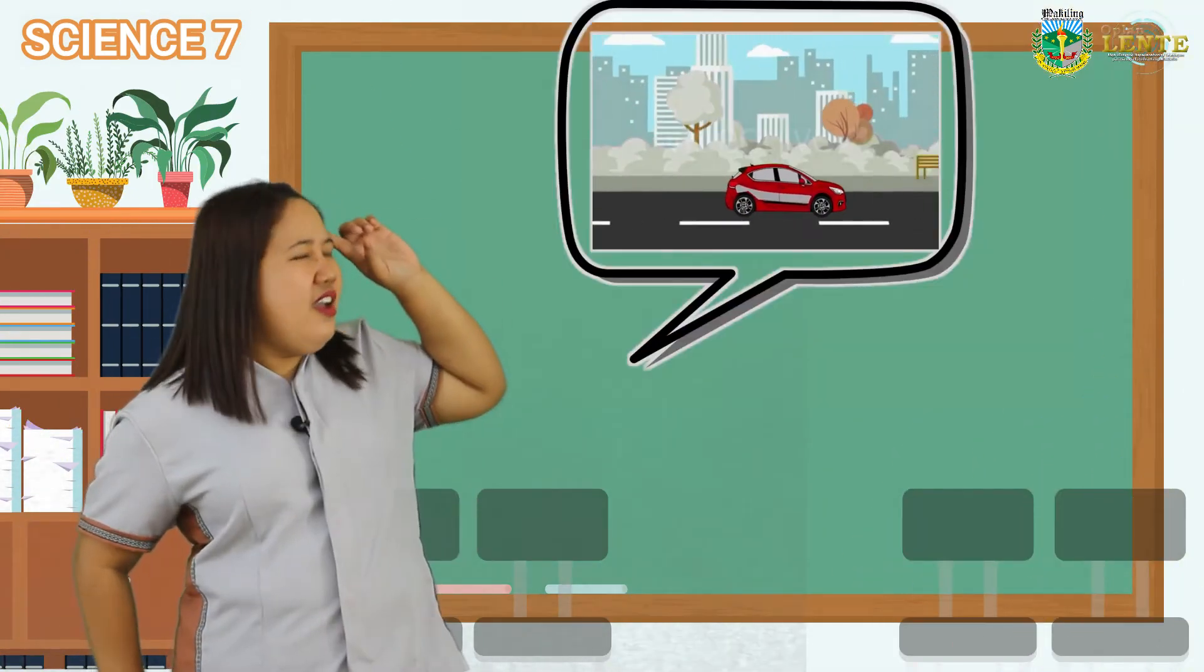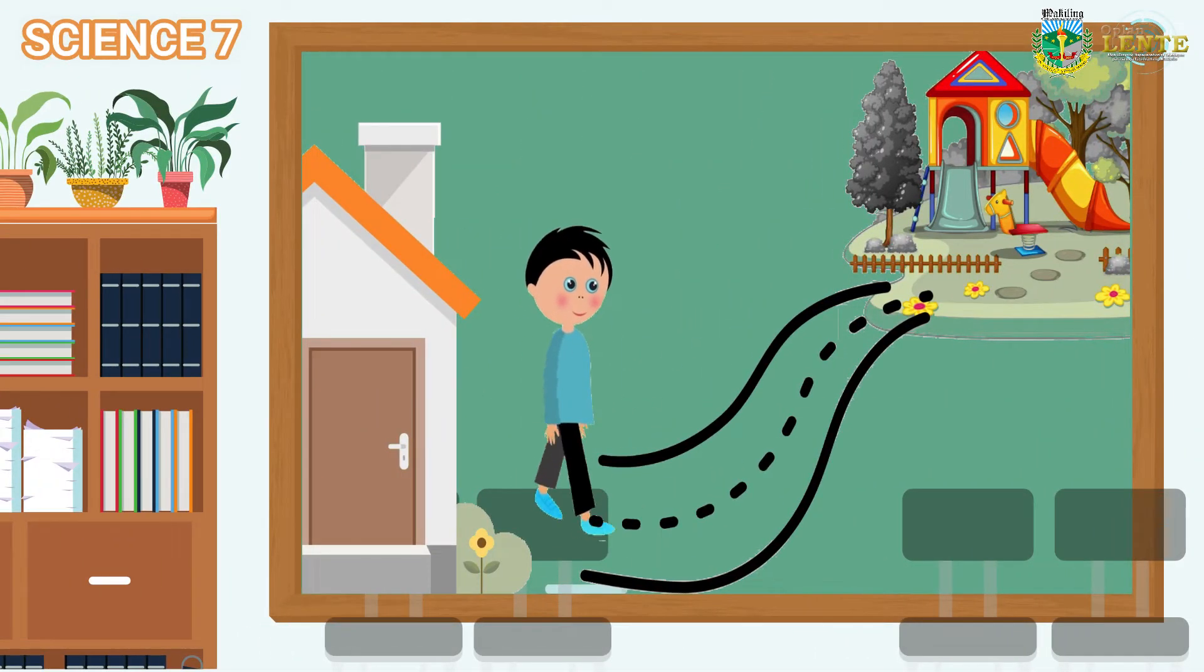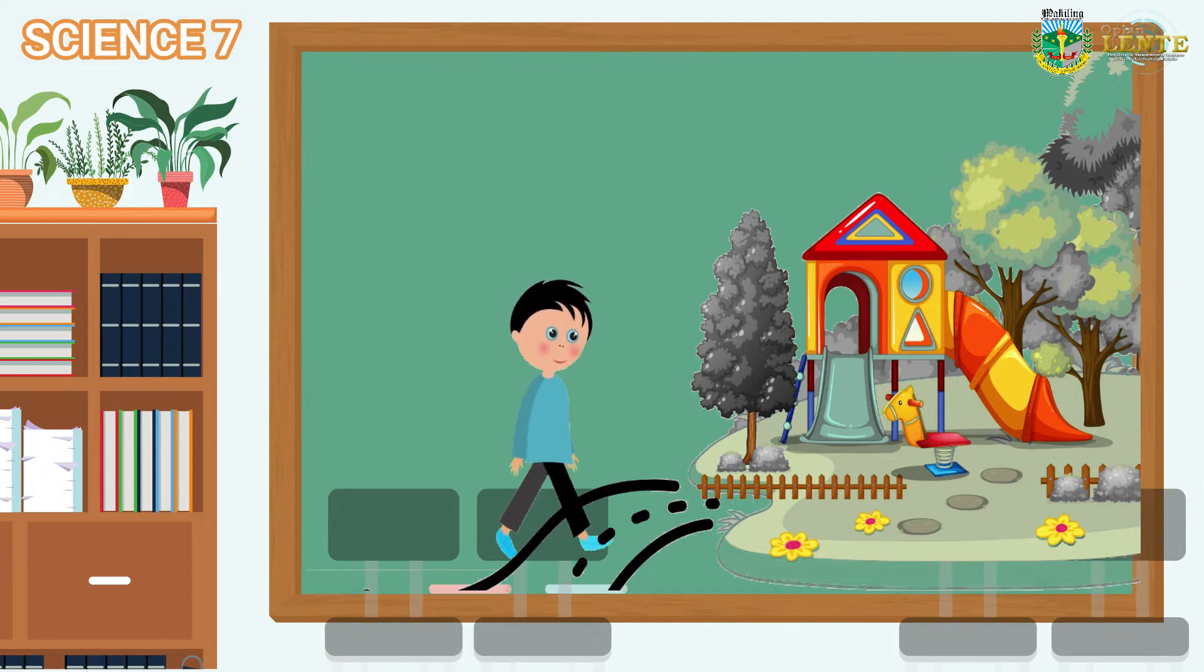How can we say that an object is in motion? Look at this illustration. Does the boy acquire motion? Correct! What is your basis for saying so? Right! We can tell if an object is in motion if it changes its position relative to a reference point. So, in our illustration, the boy is in motion relative to the house since it changes its position relative to it which serves as his reference point.